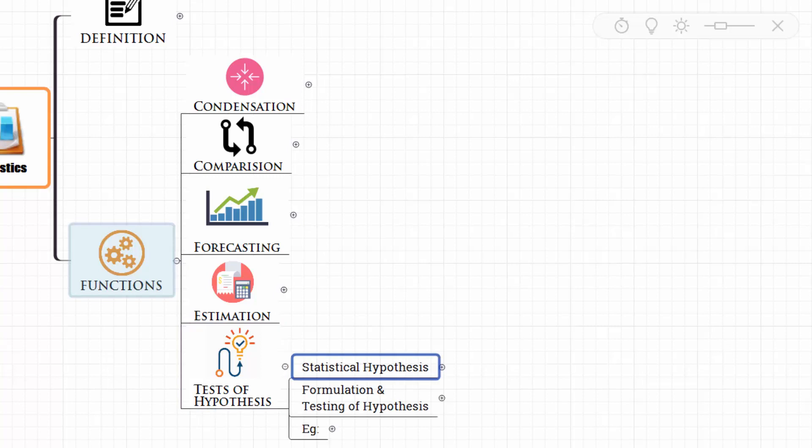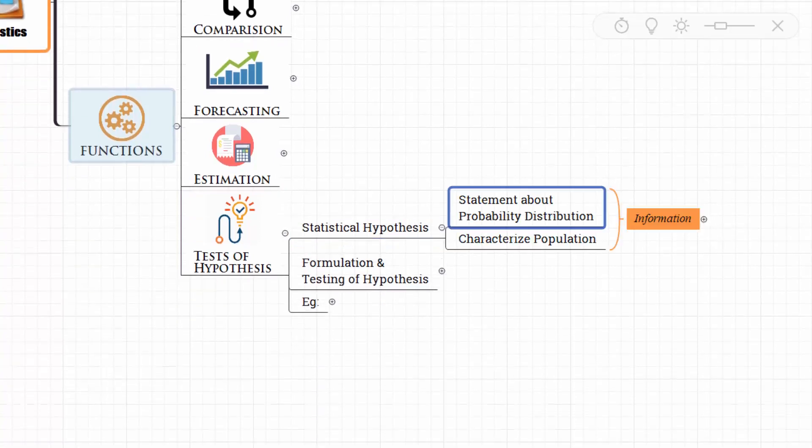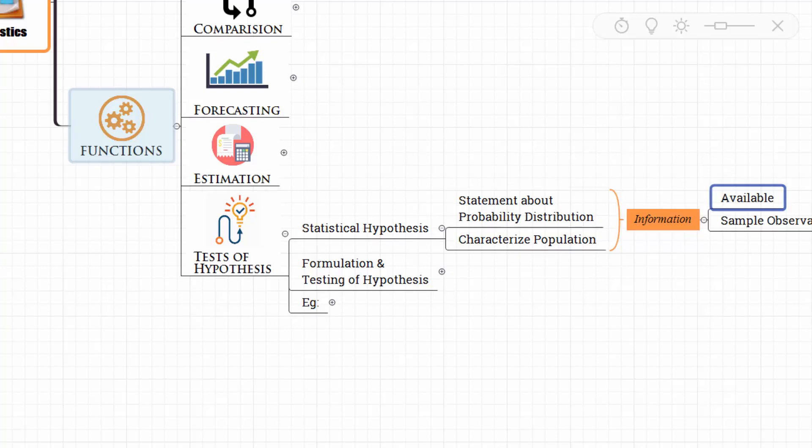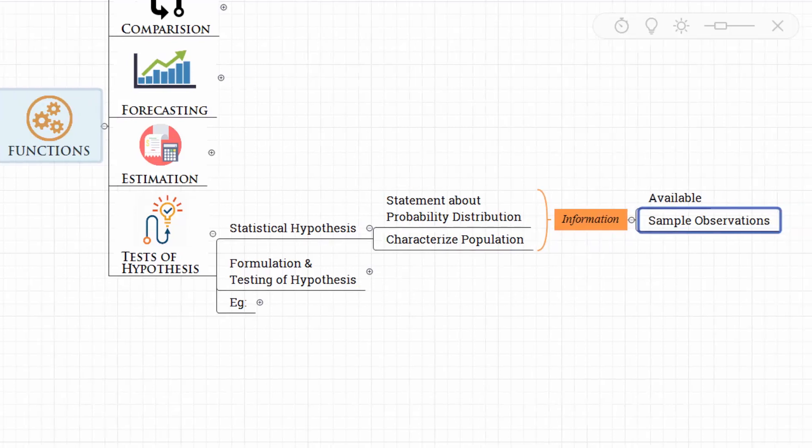What do we mean by statistical hypothesis? Statistical hypotheses are statements about probability distribution which characterize the population from information available from sample observations. Here we have some information from sample observations and that is going to characterize the population. That is, we are going to make a statement about it.